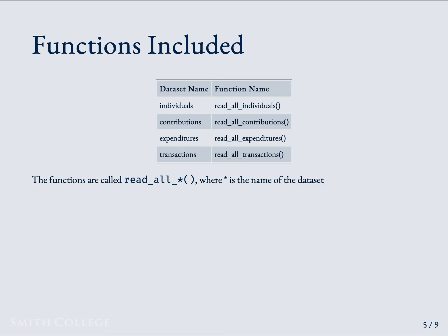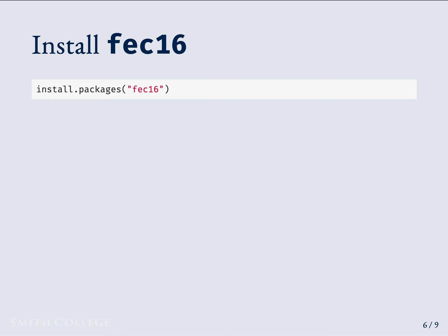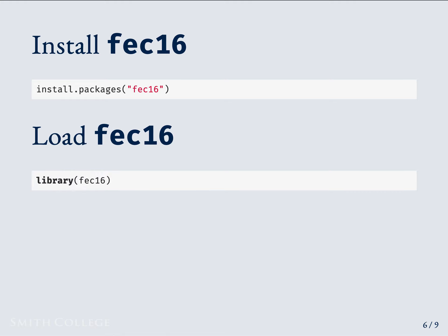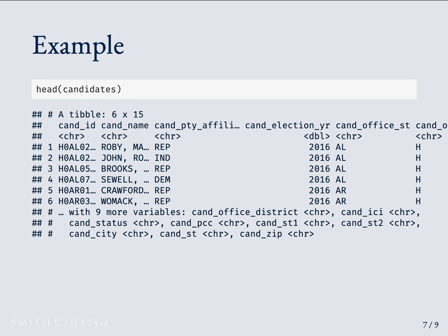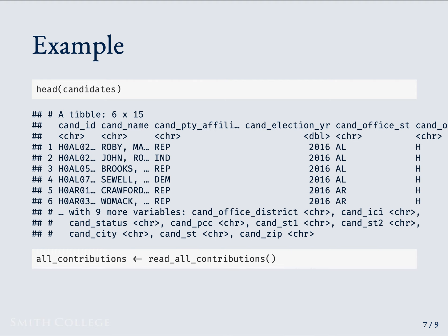Now I will show you how you can install and load the package in R and then give an example. First, to install the package, type the following command in your console. Then load the package by calling library FEC16. Now we are ready to use any of the preloaded datasets and functions. For example, to view the first six lines of the candidates dataset, call head candidates. Since the contributions dataset is included as a sample, to load the entire dataset, call read all contributions and save it to the variable as shown.